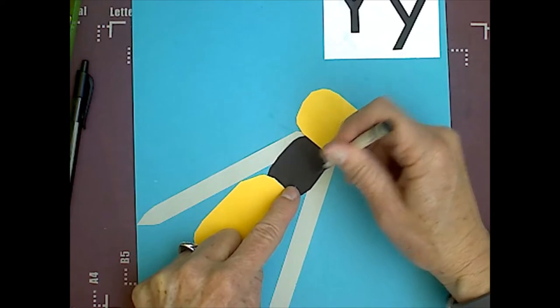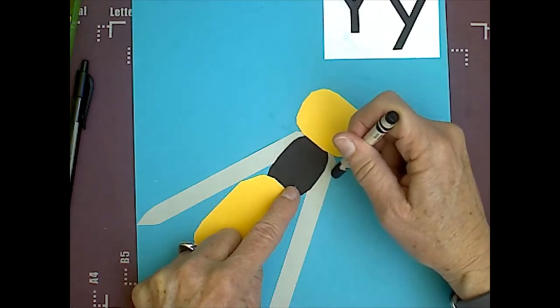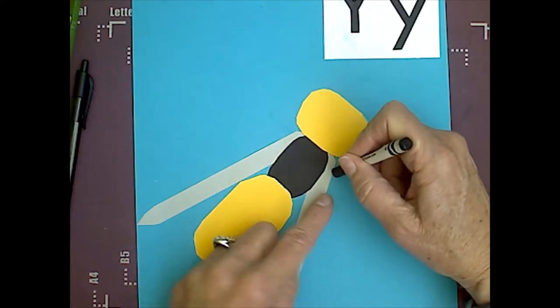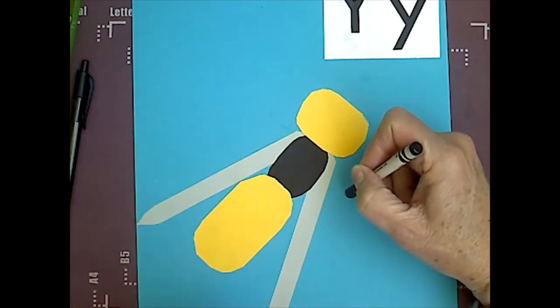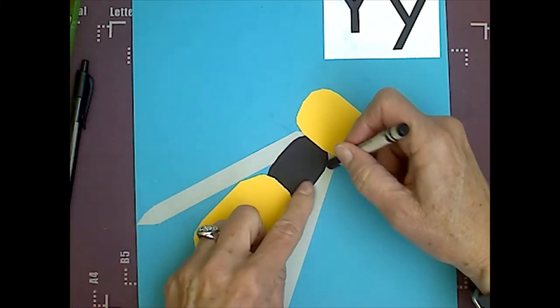Now, the legs would be coming out of the thorax, but I don't want to draw them across the wing. And remember, there's three that come out of this side and three out of this side because insects have six legs.